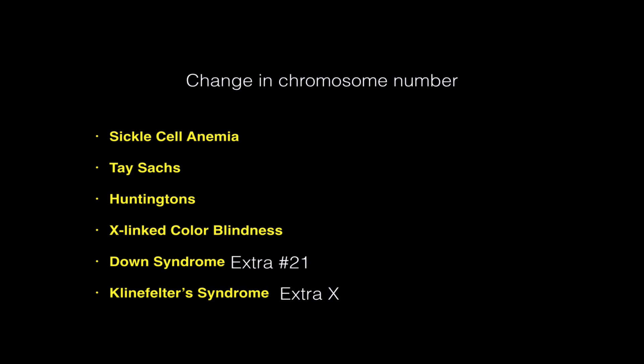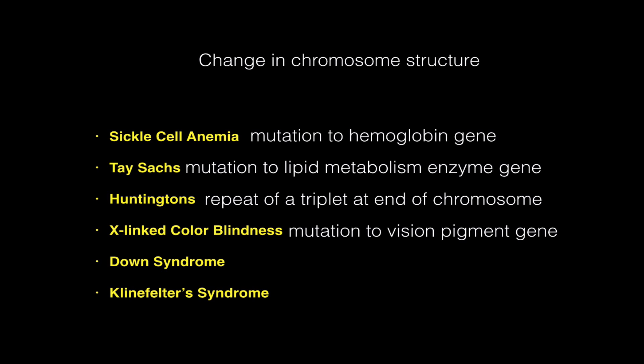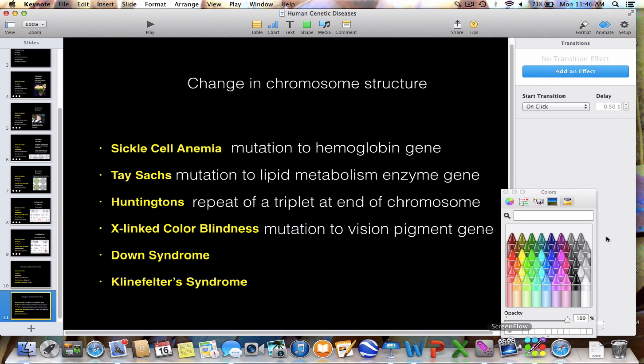To sum it up: changes to chromosome number would include Down syndrome and Klinefelter syndrome. Changes to chromosome structure would include sickle cell anemia, Tay-Sachs, Huntington's, and X-linked colorblindness, because they're all caused by mutations or changes to information on the chromosomes. I hope that helped — thanks for listening.